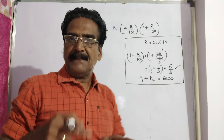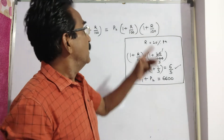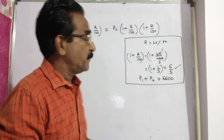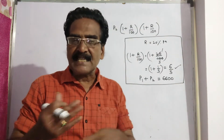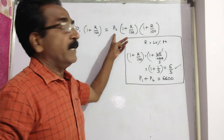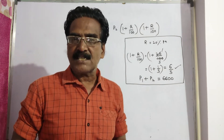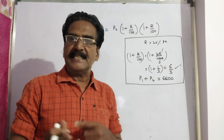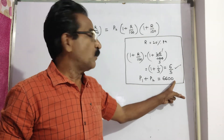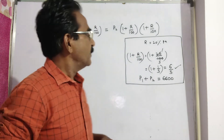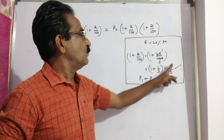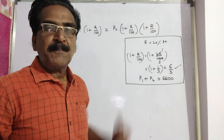This is the first installment, paid at the end of the first year, and this is the second installment, paid at the end of the second year. Here P1 is the present worth of the installment paid after the first year, and P2 is the present worth of the installment paid at the end of the second year. P1 plus P2 equals the total present worth of 6600. R is 20 percent per annum, so 1 plus R by 100 equals 6 by 5.